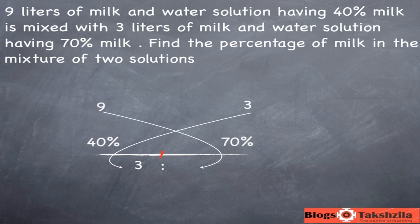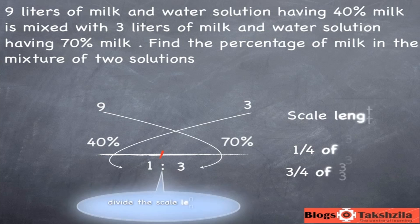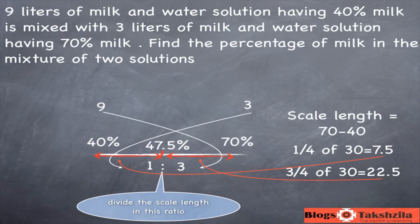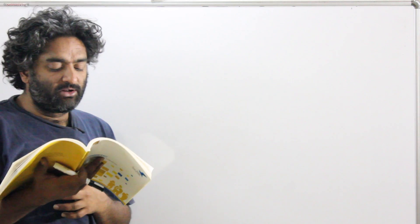The ratio is 3 is to 1. Flip that ratio and it becomes 1 is to 3. So the answer becomes 40 plus 1/4 of 30, because the scale length is 70 minus 40, which equals 30. Or equivalently, 70 minus 1/4 of 30. Either way, the answer is 47.5%. That's how we solve it with the scale, but we'll do at least one more approach in each of the following questions.